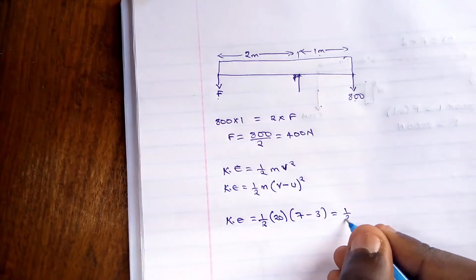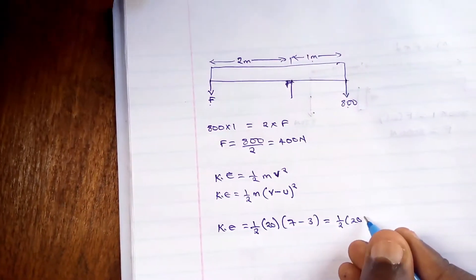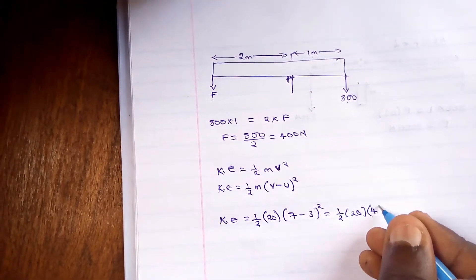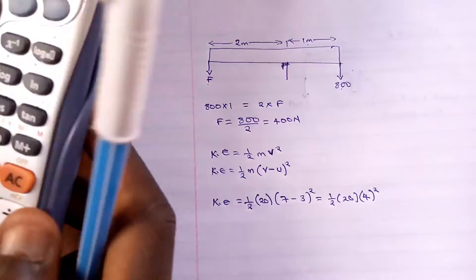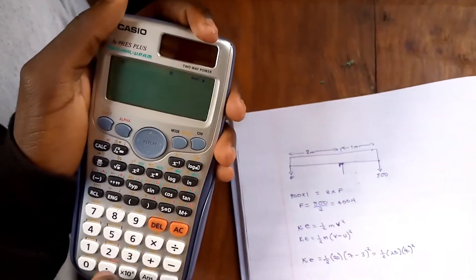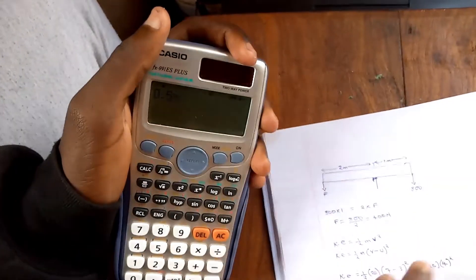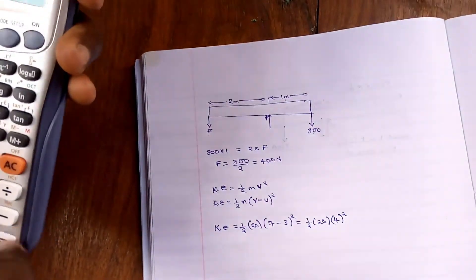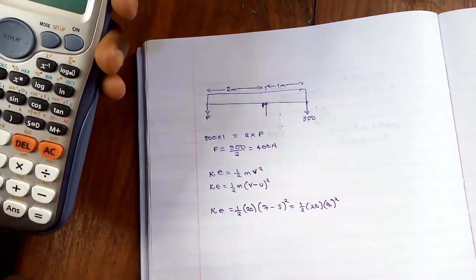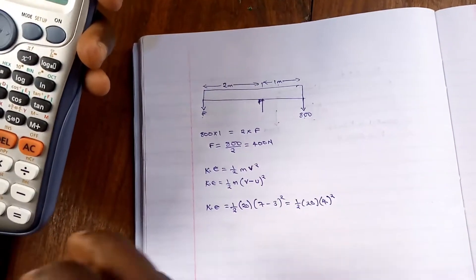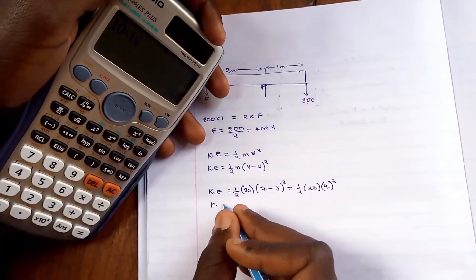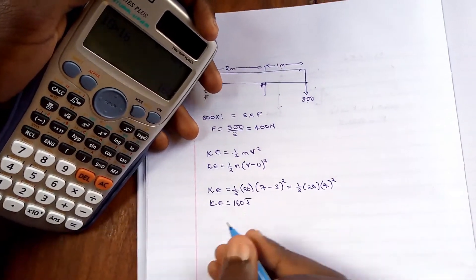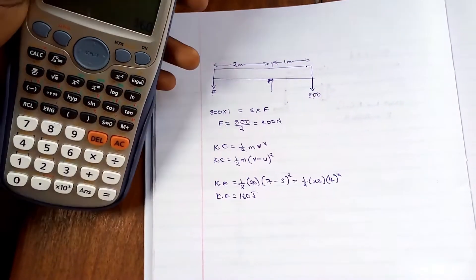Which is equal to half times 20 times 4 squared. If we compute that, that will be 0.5 times 20 times 16. That's 10 times 16, which will be equal to kinetic energy is equal to 160 joules. So the answer is B.